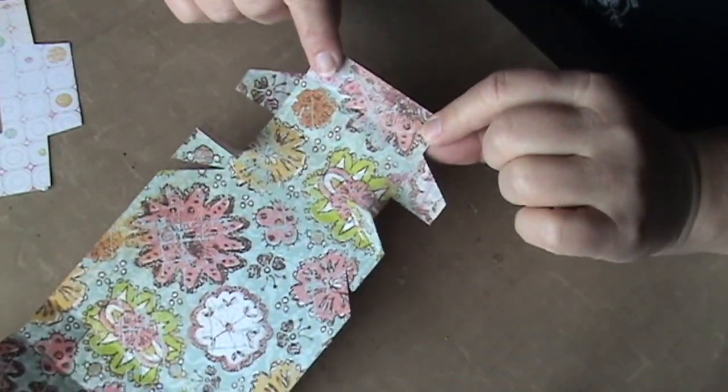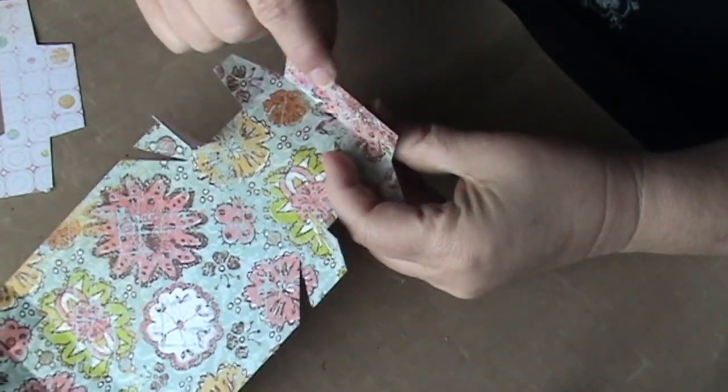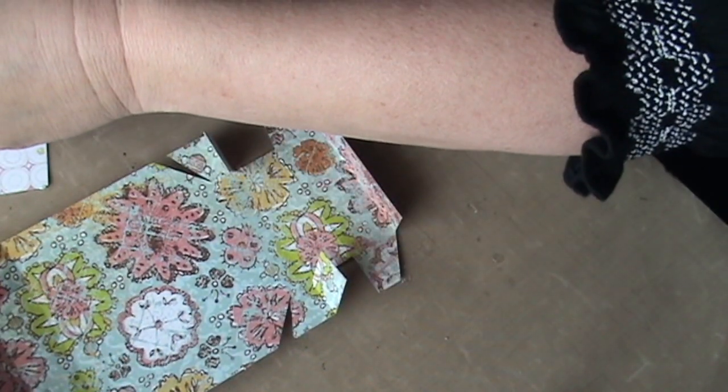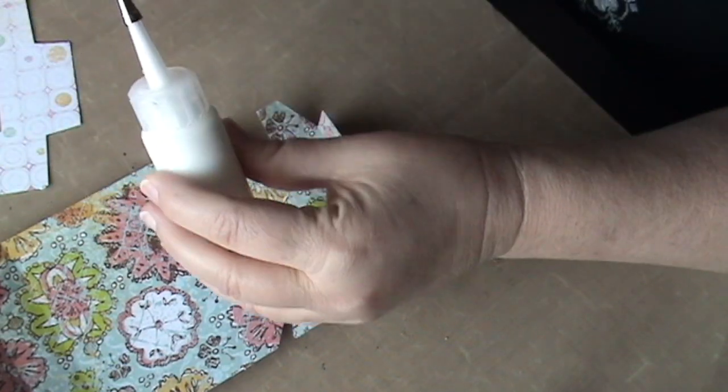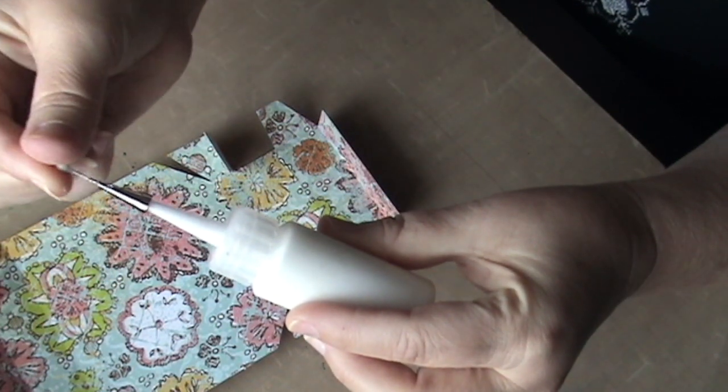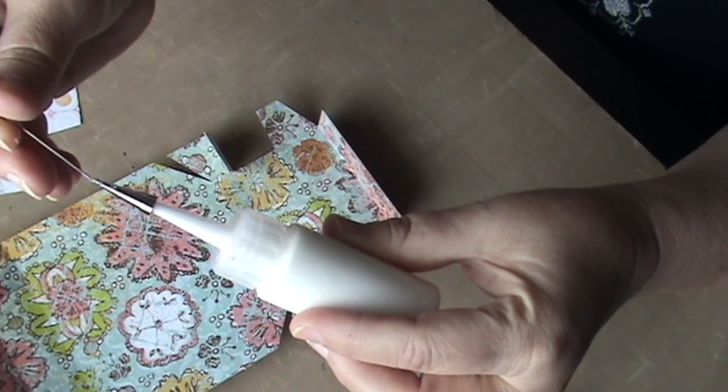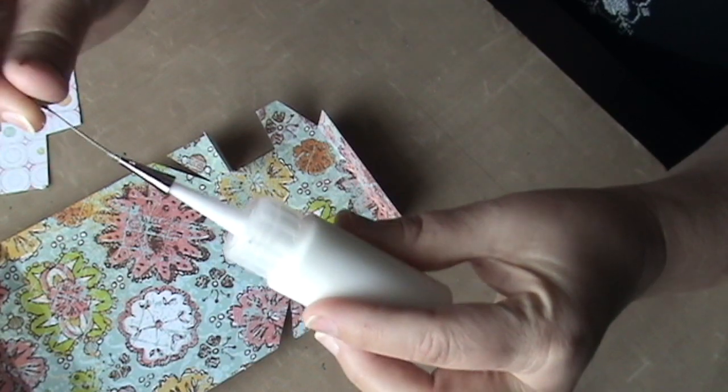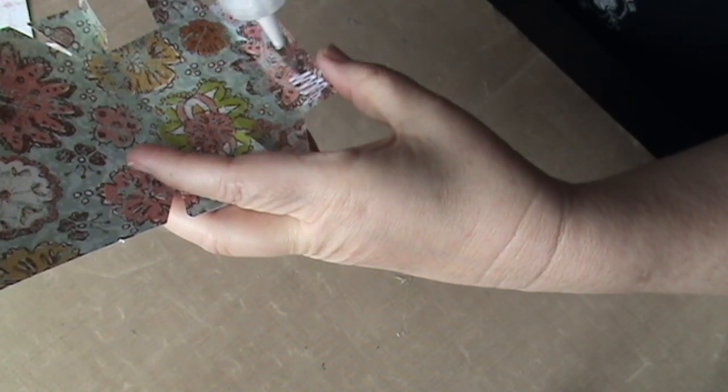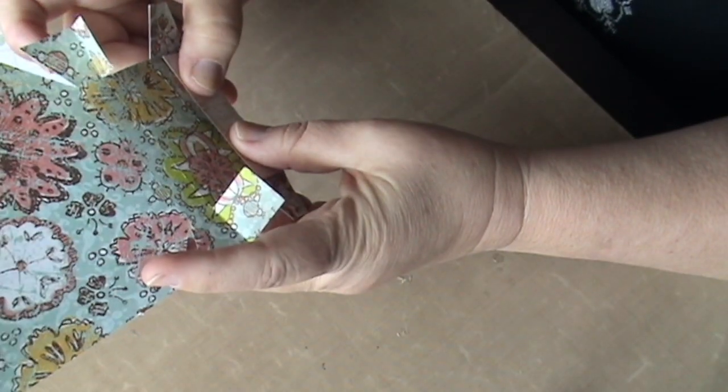We're going to start here at the top. This top flap just gets folded over and glued here, and it's just an extra support. I wanted to show you, I use the Scotch Quick Dry and I put it in one of these little bottles with a fine tip that has a little needle that I keep in it to keep it from drying out. If you leave it open for a little while and it gets stuck, you can just stick that in there and get it unplugged. So we're going to put glue on this first part right here and fold it over. Just give it a few minutes to dry.